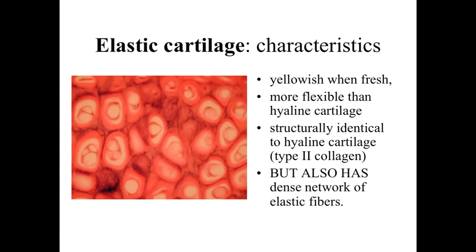Elastic cartilage has a slightly more yellowish appearance when fresh compared to hyaline cartilage, and is more flexible. Structurally, it is very similar to hyaline cartilage — it has type 2 collagen, lots of hyaluronic acid, glycosaminoglycans, and proteoglycans, providing strength and resiliency. However, elastic cartilage additionally has a very dense network of elastic fibers — like rubber bands — that can be stretched and twisted and will rebound to their natural shape. With an elastic fiber stain, you can see these rubber band-like elastic fibers between the chondrocytes, which would not be found in hyaline cartilage.